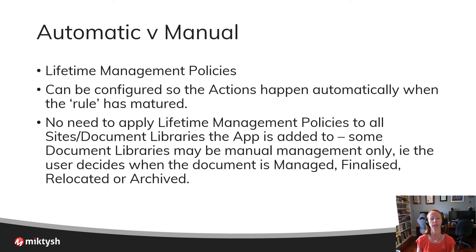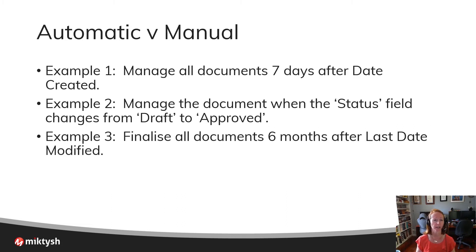You have automatic versus manual options. Lifetime management policies allow for automatic management — they can be configured so actions happen automatically when a rule has matured. For example, three hours after being saved into the document library, Content Manager will automatically manage it. Some document libraries might be configured for manual management, others for automatic, and some with no management until six months after last modified. Examples include: manage documents seven days after creation, manage when a status field changes from draft to approved, or finalize documents six months after last modified.